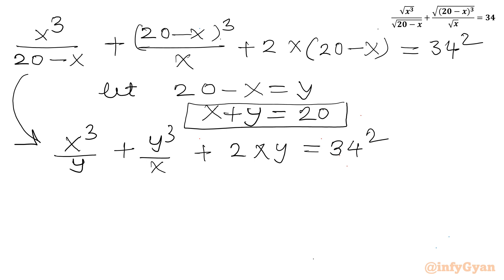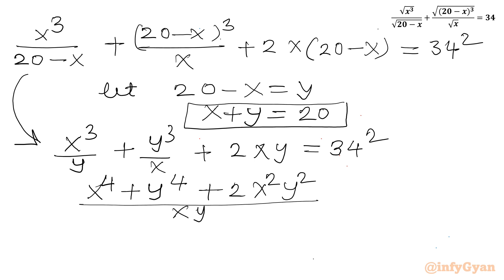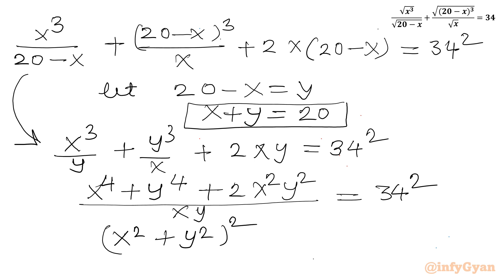Taking LCM on the left-hand side gives us x to the fourth plus y to the fourth plus 2x squared y squared, all divided by xy. The numerator is a perfect square: it equals (x² + y²)² divided by xy, which equals 34 squared.